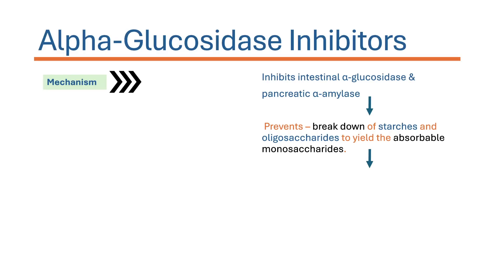Alpha glucosidase is required for the breakdown of starch and oligosaccharides into a more easily absorbable form — that is, monosaccharides. By inhibiting alpha glucosidase activity, acarbose prevents the faster breakdown of starch and oligosaccharides into the more absorbable monosaccharides.